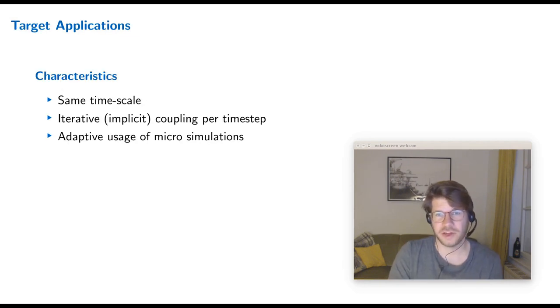So what kind of applications do we want to target in the proposed project? Three characteristics. First, the two coupled models live on the same time scale. So we have no multi-scale problem in time. In general, they could also use time stepping. Then we're going to need an iterative coupling per time step. So this is the classical implicit coupling of preCICE.